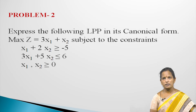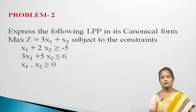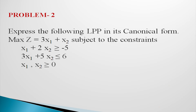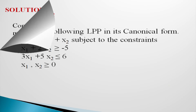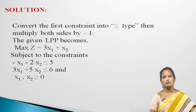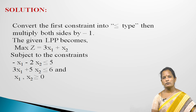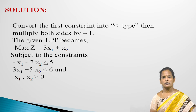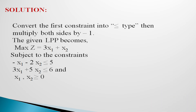Problem 2: Express the following LPP in its canonical form. Maximize Z equal to 3x1 plus x2, subject to: x1 plus 2x2 greater than or equal to minus 5; 3x1 plus 5x2 less than or equal to 6; x1, x2 greater than or equal to 0. Solution: Convert the first constraint into less than or equal to type by multiplying both sides by minus 1. The LPP becomes: maximize Z equal to 3x1 plus x2, subject to: minus x1 minus 2x2 less than or equal to 5; 3x1 plus 5x2 less than or equal to 6; x1, x2 greater than or equal to 0.